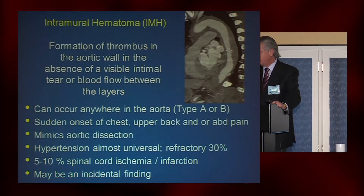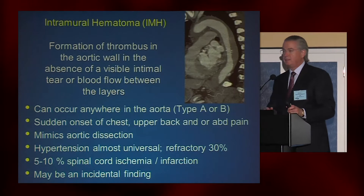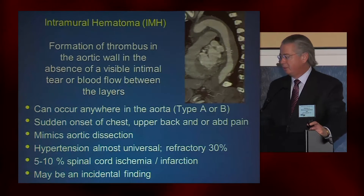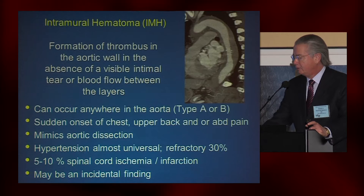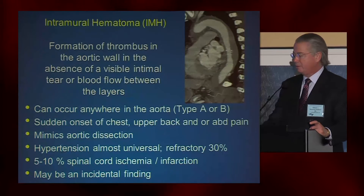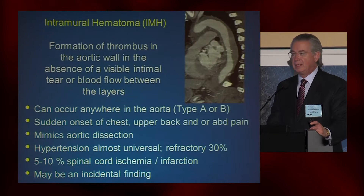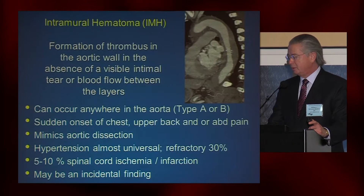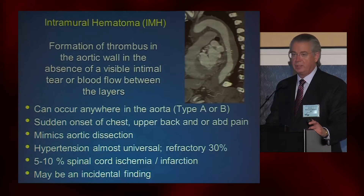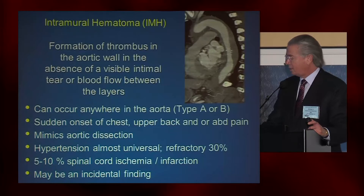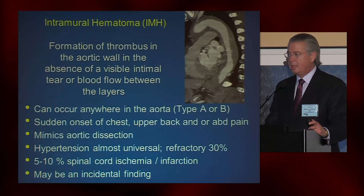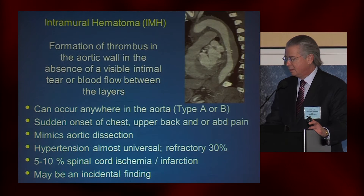These are my disclosures. An intramural hematoma is the formation of thrombus in the aortic wall with an absence of a visible intimal tear or blood flow between the layers. It can occur anywhere in the aorta and is labeled type A and type B, just the same way as dissections.